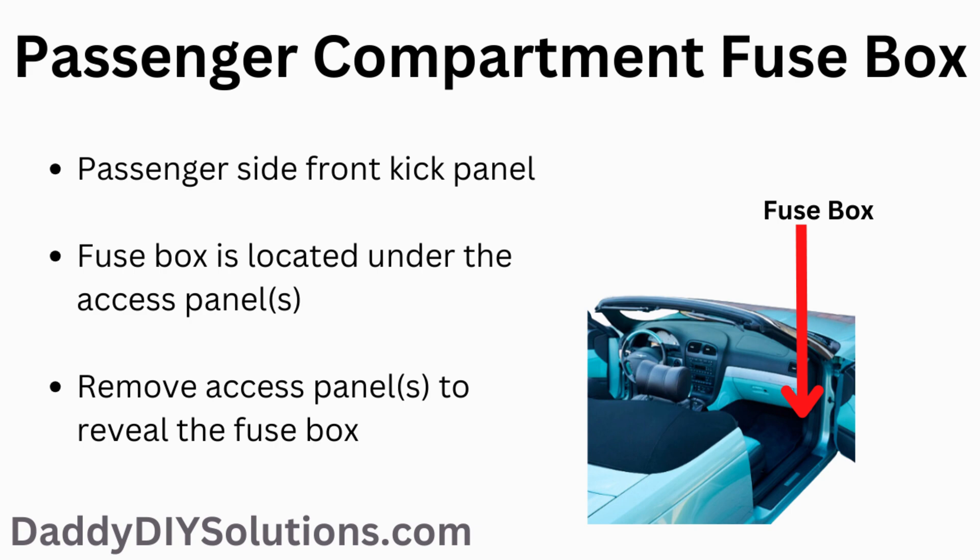Your 11th generation Ford Thunderbird has three fuse boxes. The fuse box that contains the components for today's video is located in the passenger compartment. Once you locate the passenger side front footwell, remove the access panel to reveal the fuses and relays. The actual physical location of the passenger compartment fuse box is shown here in the picture.